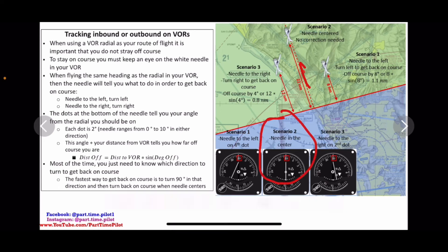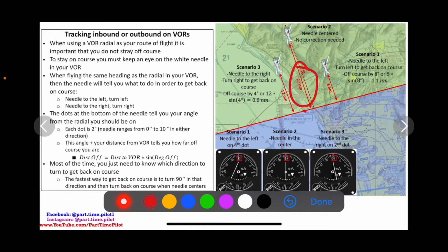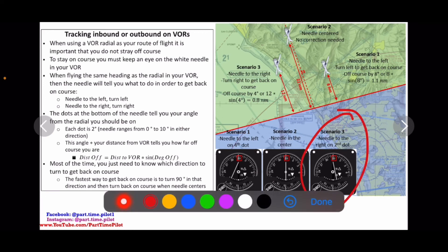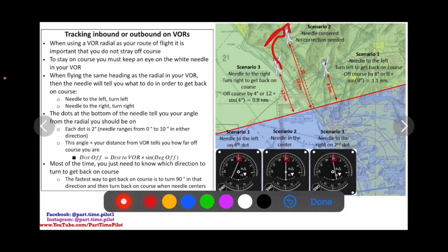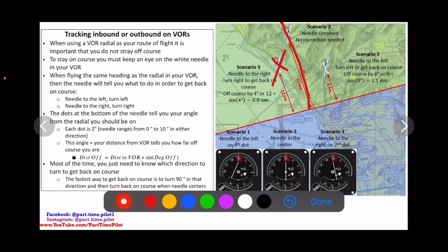In scenario two, the needle is centered. Since the needle is centered, there's no correction needed — we are right on the radial. If we had a VOR-DME, it might tell us our distance; in this example it says 22 nautical miles. But we don't need to do any correction because our needle is centered. In scenario three, the needle is to the right on the second dot — each dot is two degrees, so that's four degrees off. Because the needle is to the right, we need to turn right to get back on course, which puts our aircraft to the left of the radial.